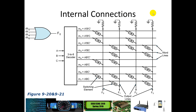When you store data onto a ROM, you are burning in these switching elements — either leaving them in or burning them off — and that creates where your 1s and 0s go. So when people talk about burning a CD or DVD, they're really fusing in these switching elements. This works with the internal decoder. So function F0 would be a 1 for either M0, M1, M4, or M6. And F1 would be M2, M3, M4, M6, or M7. Wherever you have a switching element, you can think of it as being like putting it into an OR gate.